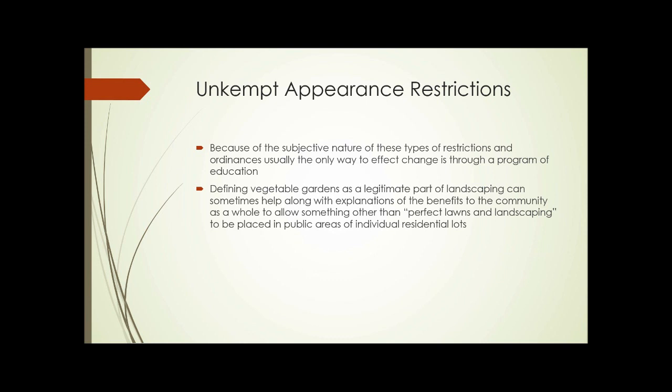Regarding unkempt appearance restrictions — because of the subjective nature of these types of ordinances, usually the only way to affect change is through education. Defining vegetable gardens as a legitimate part of landscaping can sometimes help, along with explanations of the benefits to the community of allowing something other than perfect lawns in public areas of residential lots. These restrictions are most restrictive in homeowners association areas, and sometimes you just can't change them. If they are going to be changed, education is the key.